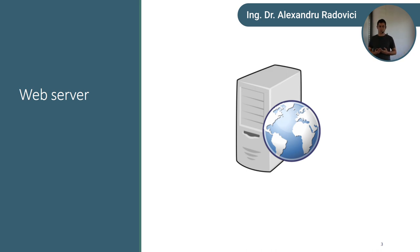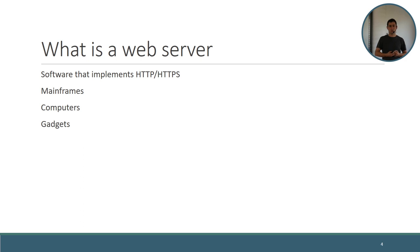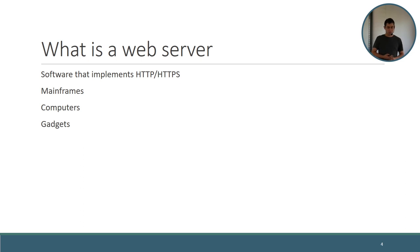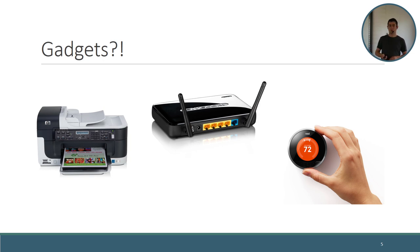So first of all, the web server. A web server is basically a piece of software that serves a web page — that means an HTML file. When we talk about a web server, we are not referring to the physical box, like the computer, but to a piece of software. That software implements the HTTP or HTTPS protocols. In ancient times — about 25 years ago — it would run on mainframes, then it migrated to computers, and now it's migrating to gadgets like printers, routers, and even the Nest thermostat.